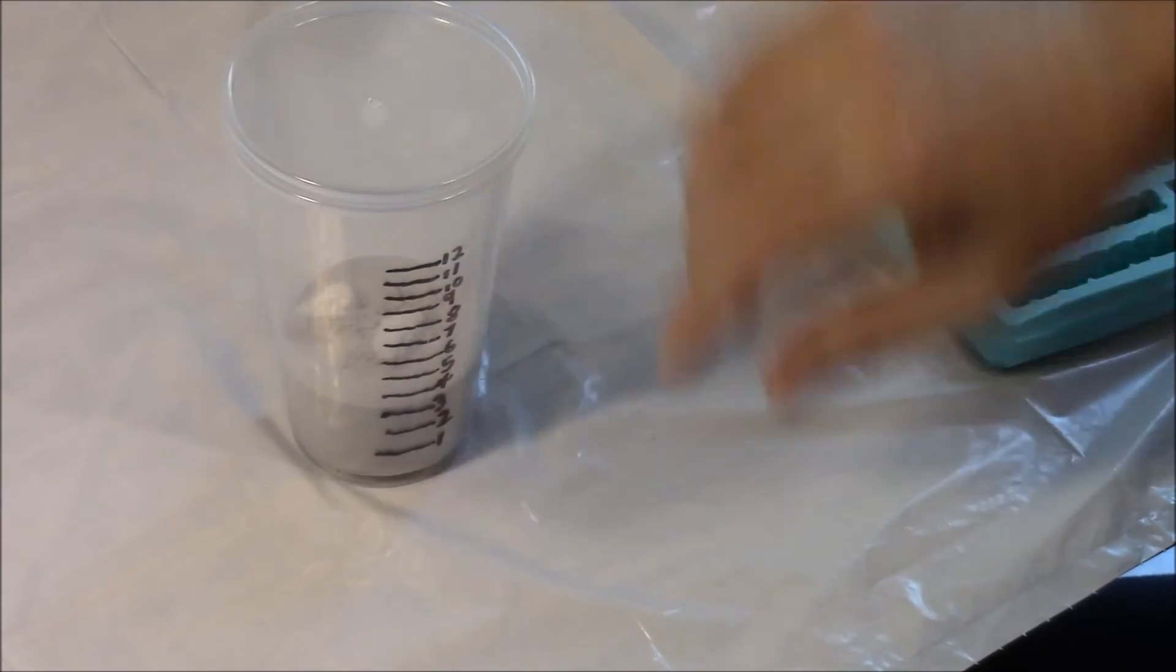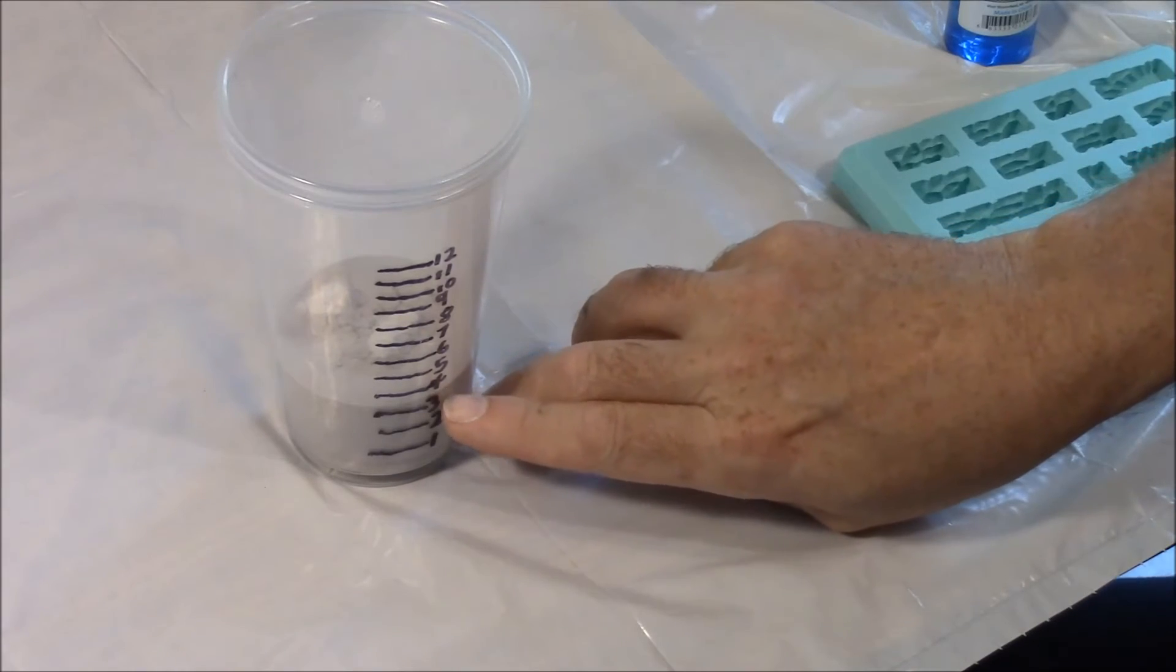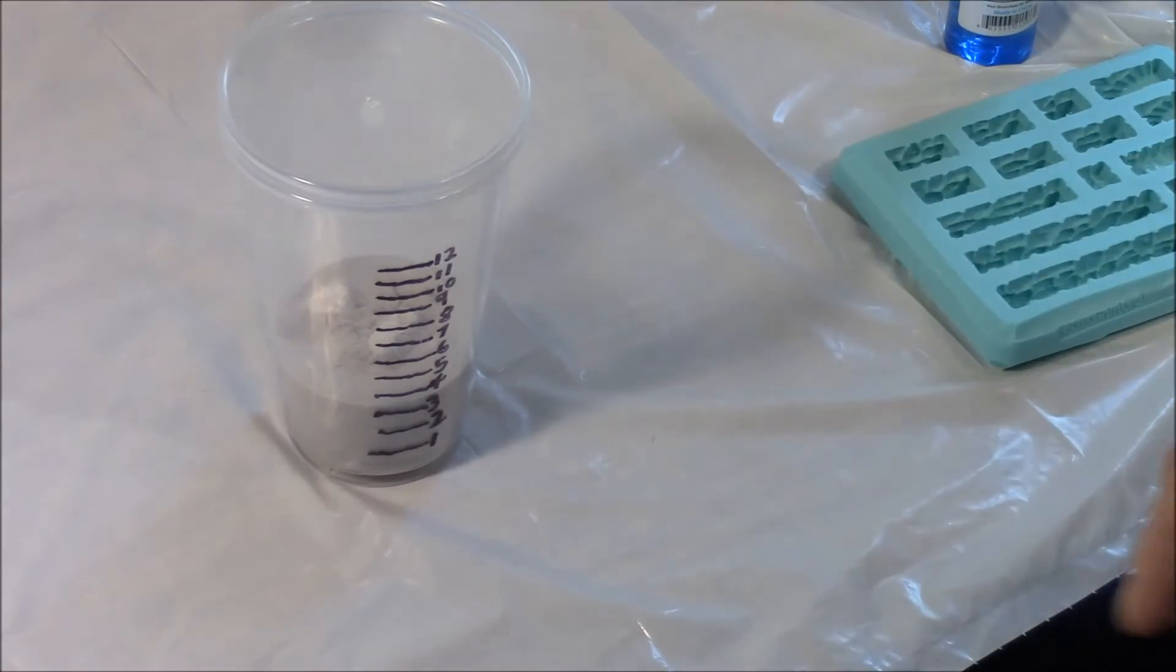Ounce-wise, it looks like for two ounces, we're almost up to the four ounce mark, but not quite. We're kind of like at three and a half.